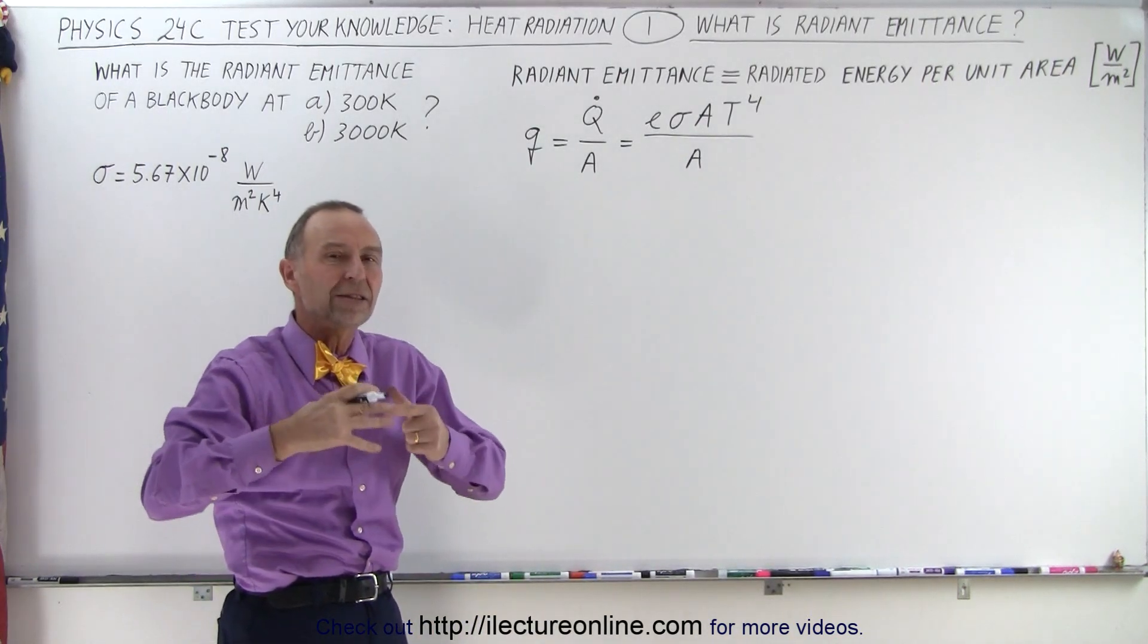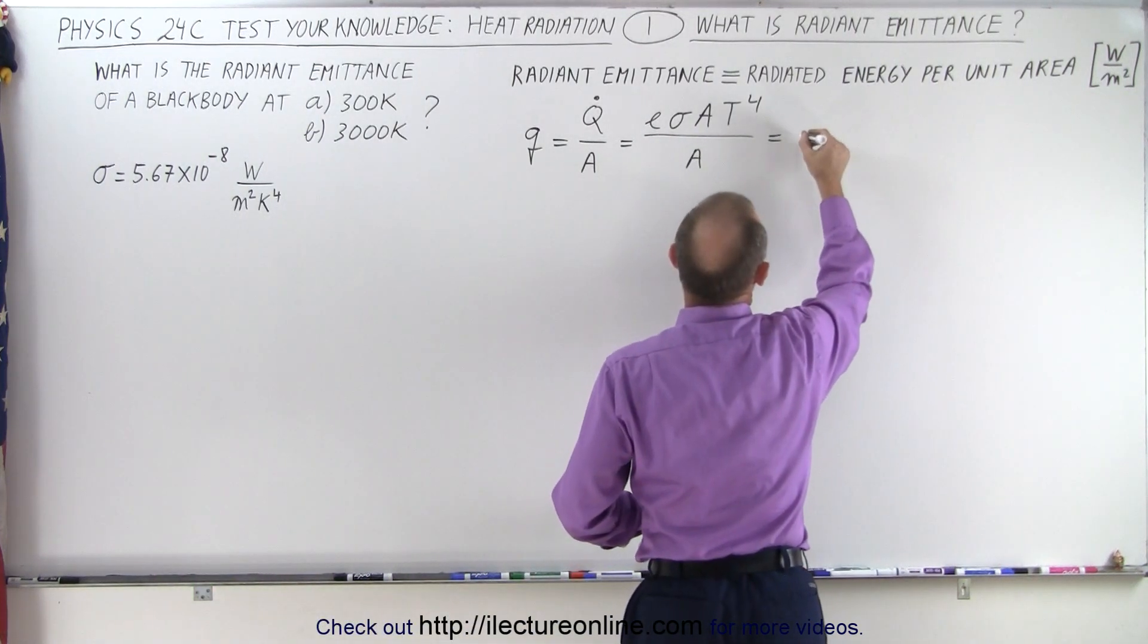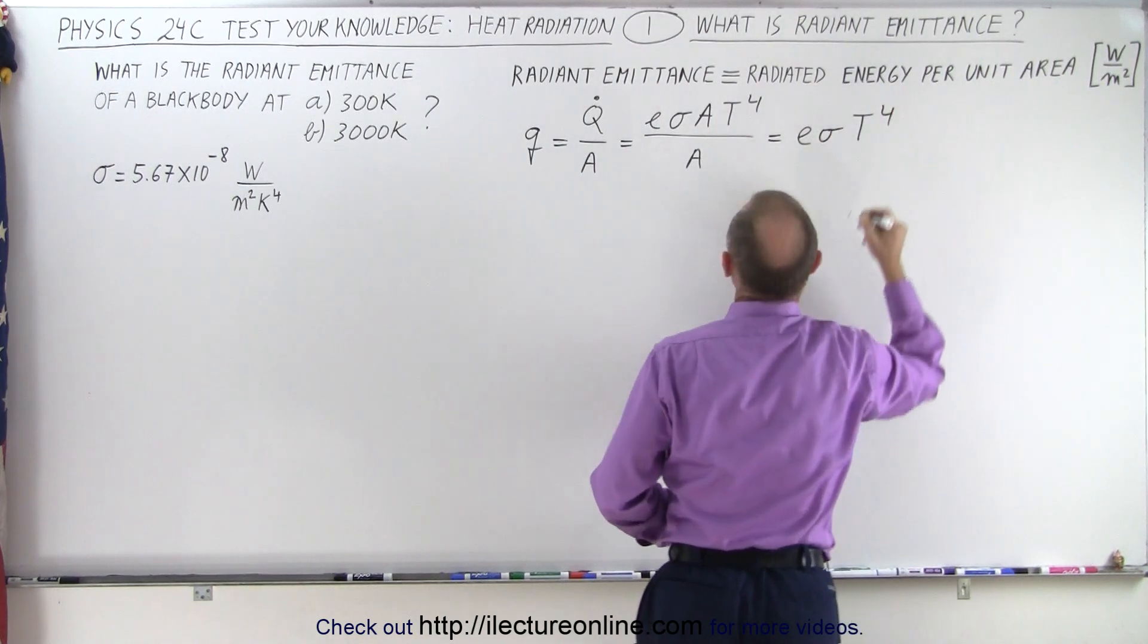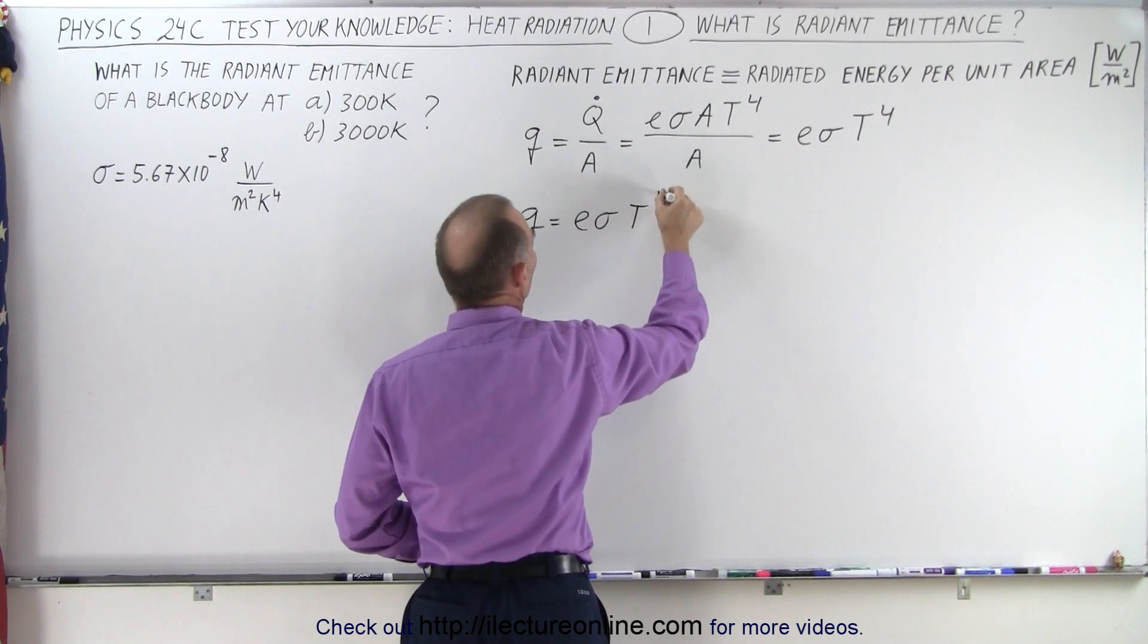So it's essentially the amount of heat radiated per unit area. This can then be written as E times sigma times temperature to the fourth power, or Q equals E sigma T to the fourth power.